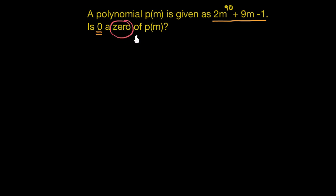What do we mean by this zero? This zero means we are talking about that particular value of m, or maybe more than one values of m, that would make this polynomial p(m) equal to 0.